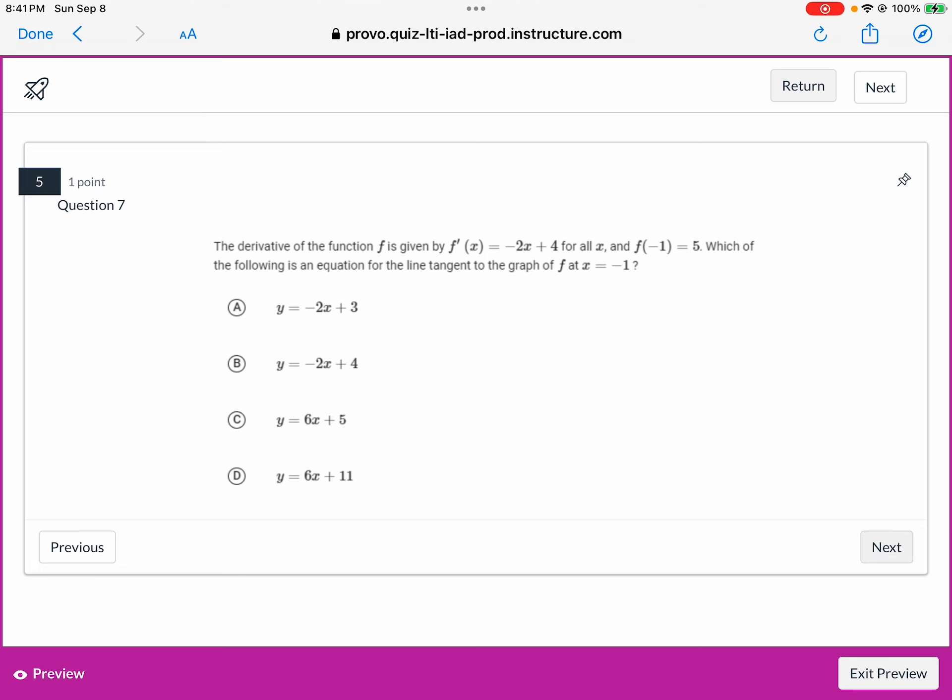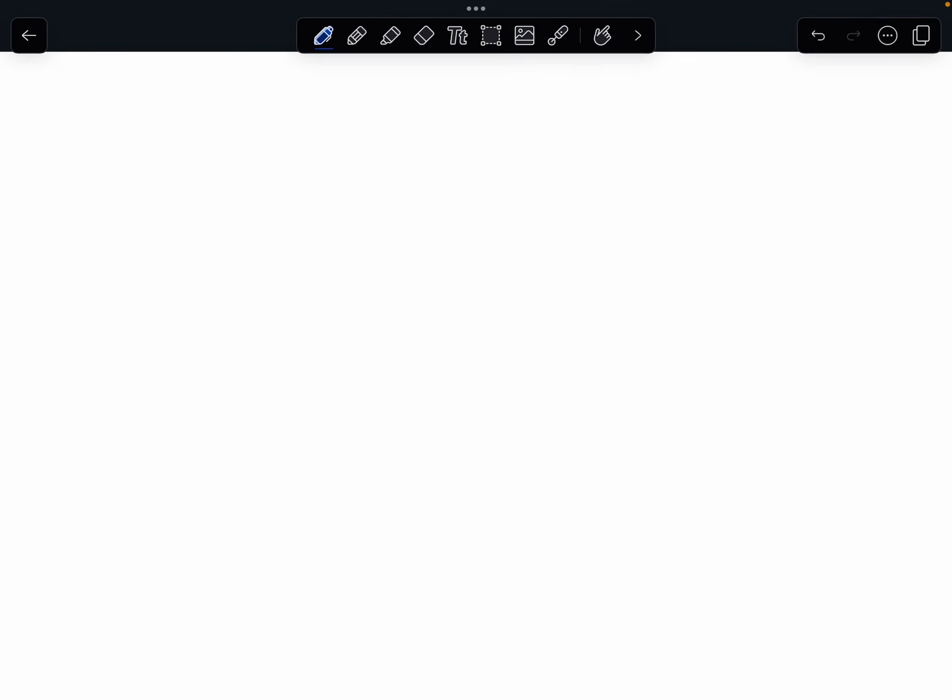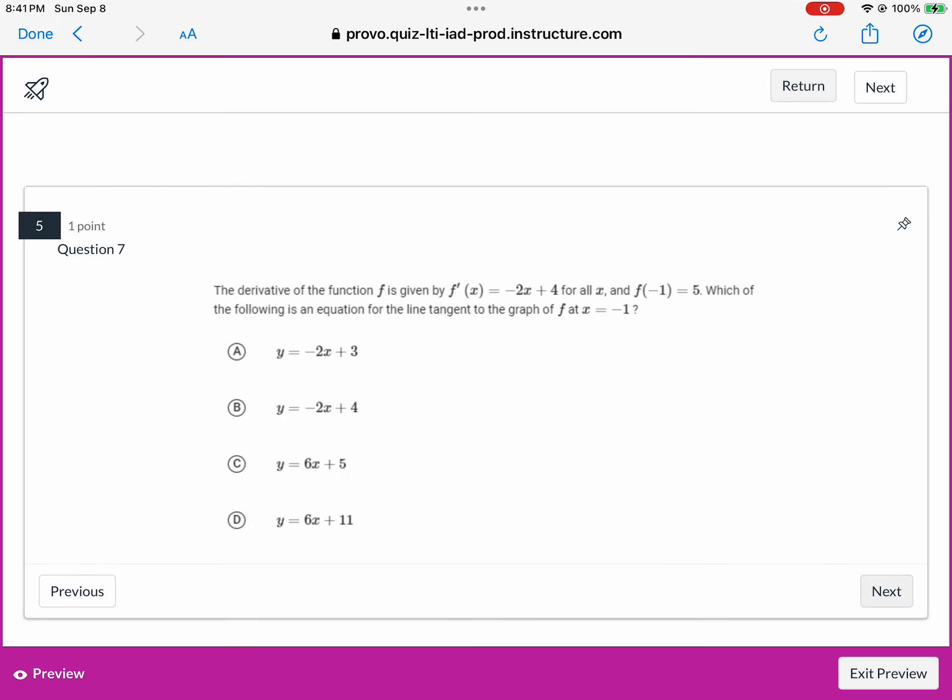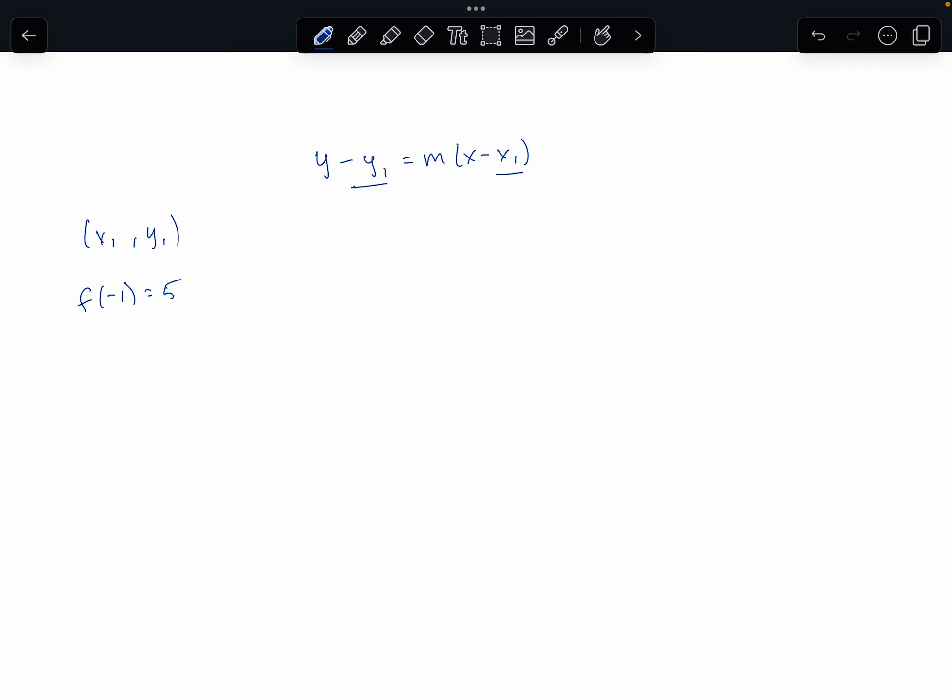The derivative of the function f is given to us, so we have the slope of f given to us as a function. We're given a point on the function, and which of the following is an equation of the tangent line of f at x equals 1? So to find the tangent line, which is given as y minus y1 equals m times x minus x1. So y1 and x1 is a point, which we do have. We're told that f of negative 1 is equal to 5. So we have a point, we have negative 1 comma 5.